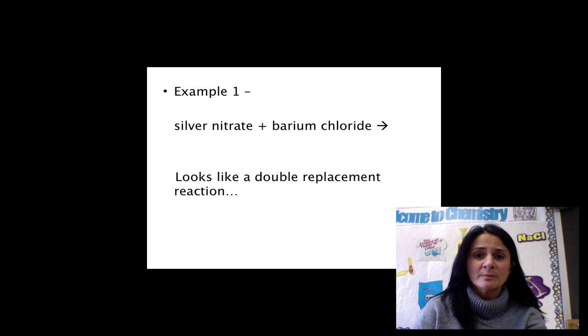If you remember, in a double replacement reaction, we have two couples dancing on the dance floor, so to speak. Those couples decide to switch partners. For simplicity's sake, we are going to let the cations be the boys in the couple, and we are going to let the anions be the girls in the couple.